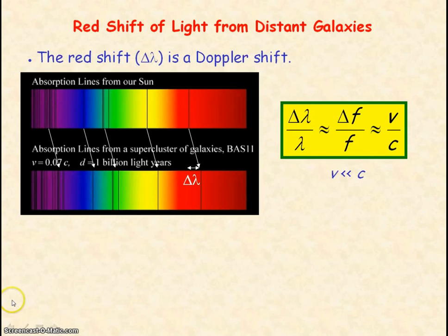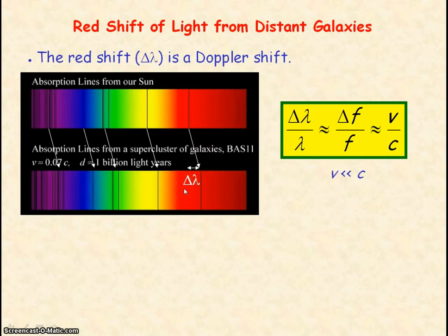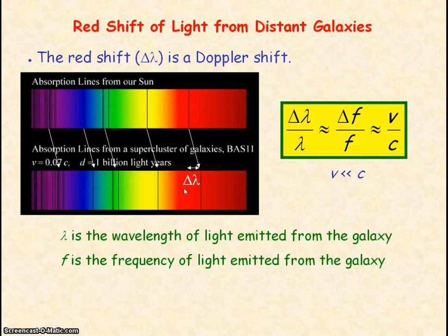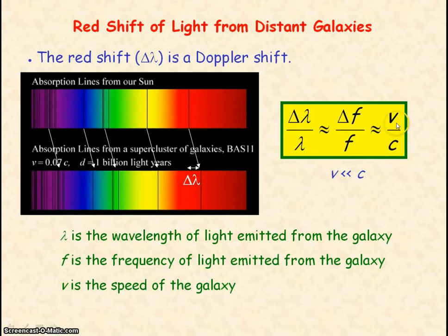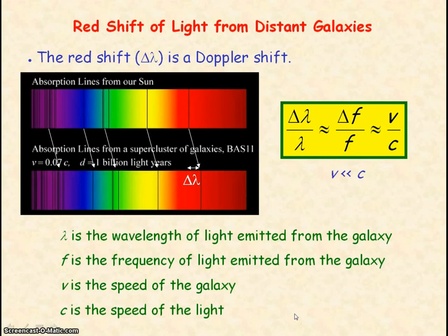The red shift of light provides evidence that supports the universe expanding. As the red shift of light is a Doppler shift, we can use the Doppler shift equation where delta lambda is the change in wavelength, and lambda and frequency are the wavelength and frequency of the light emitted from the galaxy. V would represent the speed of the galaxy and C would be the speed of light. So from the red shift — the change in wavelength — we can determine the speed at which the galaxy is moving away from Earth.